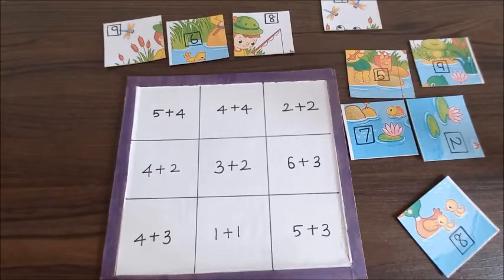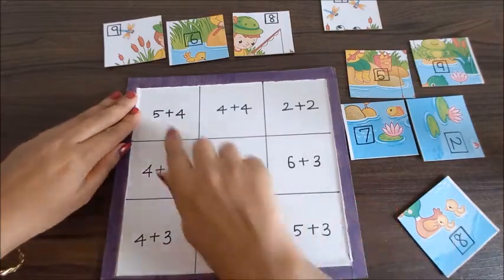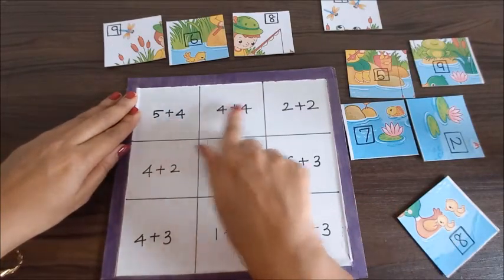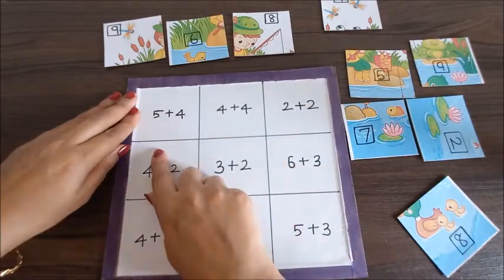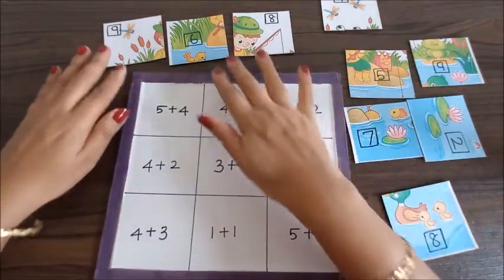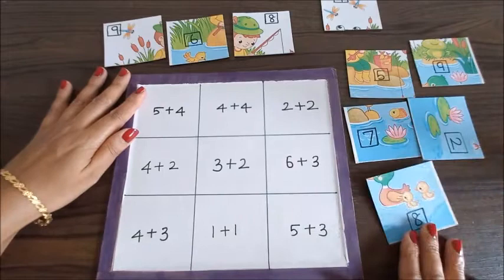Hello everyone, welcome back to the channel. Today's TLM is about single digit addition. As you can see here, there are some single digit addition problems in square boxes, and there are some pictures which have numbers on it.